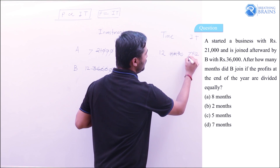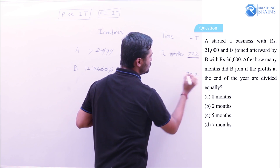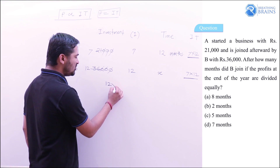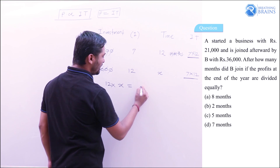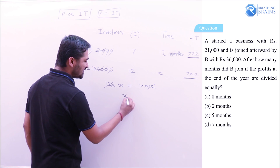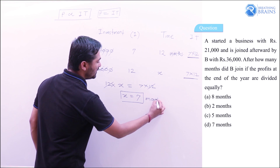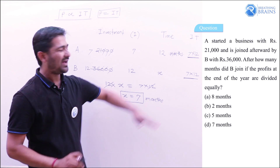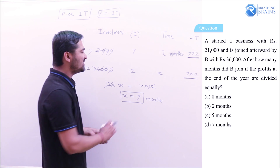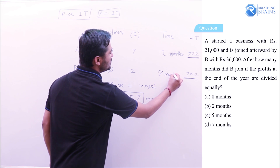For equal profits, the product of investment and time must be equal for both partners. So A's ratio: 7 × 12. For B: 12 × t = 7 × 12. Cancelling 12 from both sides, t = 7 months. So B's period of investment must be 7 months.